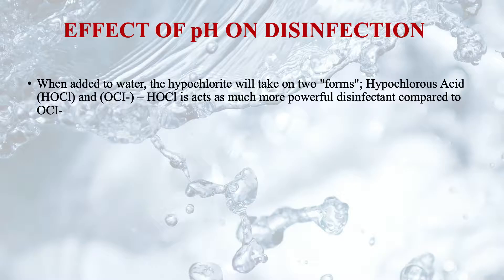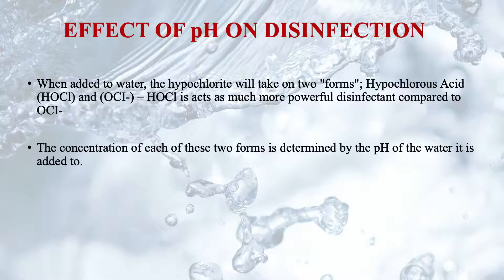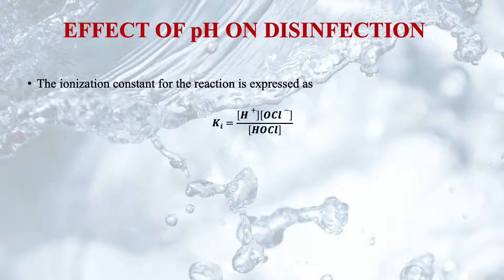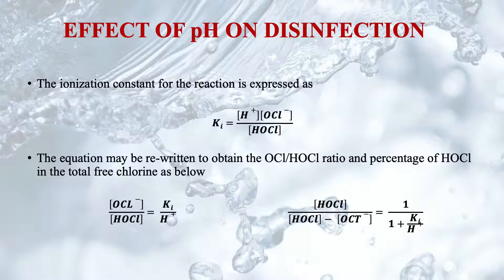The next parameter is pH, which also affects the disinfection process. Even a slight change in pH may result in reduction or enhancement of the efficacy of the disinfectant significantly. Particularly in case of chlorination, when chlorine is added to water, hypochlorite will take on two forms: hypochlorous acid (HOCl) and hypochlorite ion (OCl⁻). Hypochlorous acid is a much more powerful disinfectant compared to the hypochlorite ion. The concentration of each of these two forms is determined by the pH of the water to which they are added.